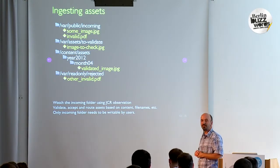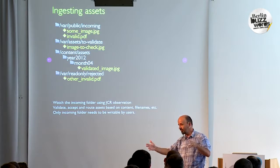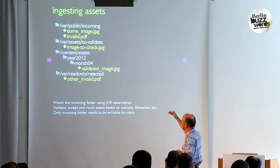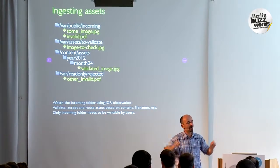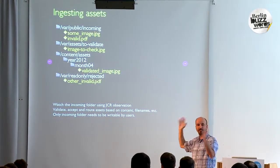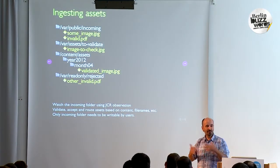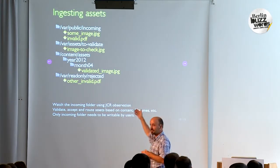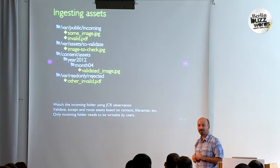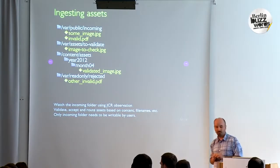Another example is ingesting assets, something you often do in a content system. Raw images come in and you need to validate them — maybe there's legal review about copyright. You need to compute different renditions, add some metadata, etc. The pattern of having different folders works very well here, also because of access control. You could leave the var/public/incoming folder totally open — publicly writable — and then start restricting things. The validate folder might be accessible only to staff, because they're reviewing the images. When they approve an image, the system moves it under content/assets. Splitting things into different paths is very useful in terms of access control and tracing who does what.